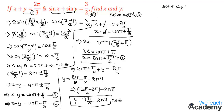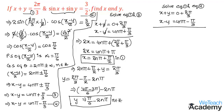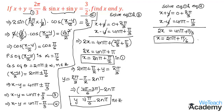Similarly, let us solve equations 1 and 4. Equation 1 is x plus y equal to 2π/3, and equation 4 is x minus y equal to 4nπ minus π/3. Adding them, plus y and minus y cancel, and we get 2x equal to 4nπ plus 2π/3 minus π/3, which becomes 4nπ plus π/3. Transferring 2 to the right-hand side gives x equal to 2nπ plus π/6, where n belongs to integers.